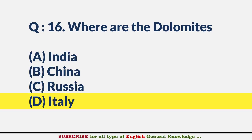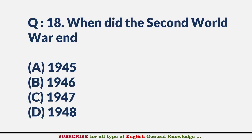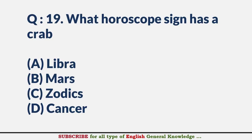When did the American Civil War end? — Answer B: 1865. When did the Second World War end? — Answer A: 1945. What horoscope sign has a crab? — Answer D: Cancer.